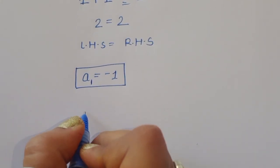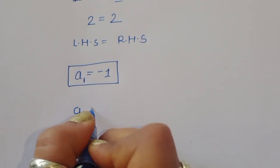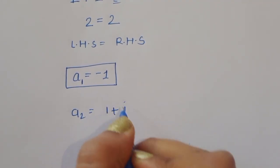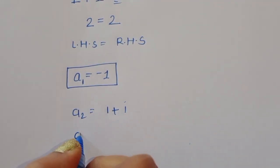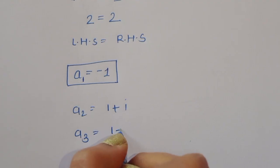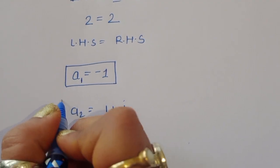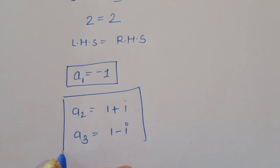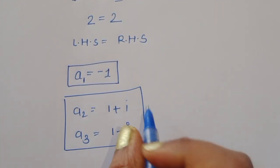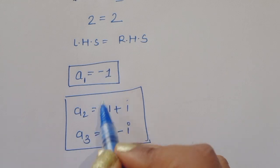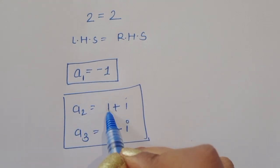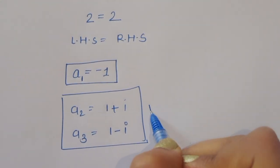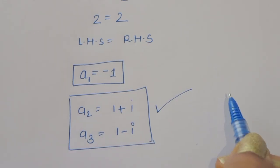So we got three solutions in total: a₁ equals minus 1, a₂ equals 1 plus i, and a₃ equals 1 minus i. Thank you.